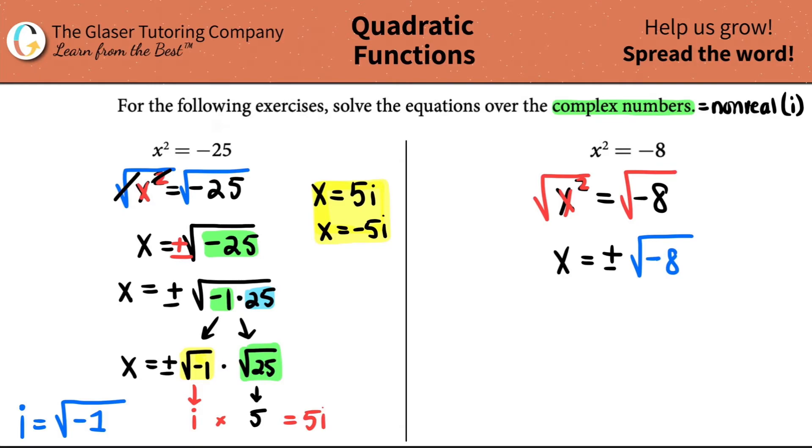How do I break that up? Well, you're always going to break it up into one being negative one times eight. And now you can separate the two of them out. So you can say X equals plus or minus the square root of negative one times the square root of just eight.